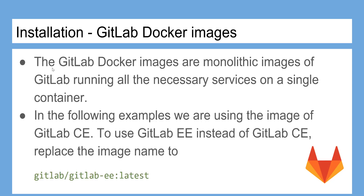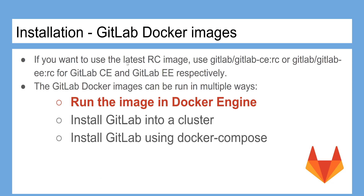The GitLab Docker images are monolithic images of GitLab running all the necessary services on a single container. In the following examples we're using the image of GitLab CE. To use GitLab EE instead, replace the image name to gitlab/gitlab-ee:latest. If you want to use the latest RC image, use gitlab/gitlab-ce:rc or gitlab/gitlab-ee:rc for GitLab CE and GitLab EE respectively.